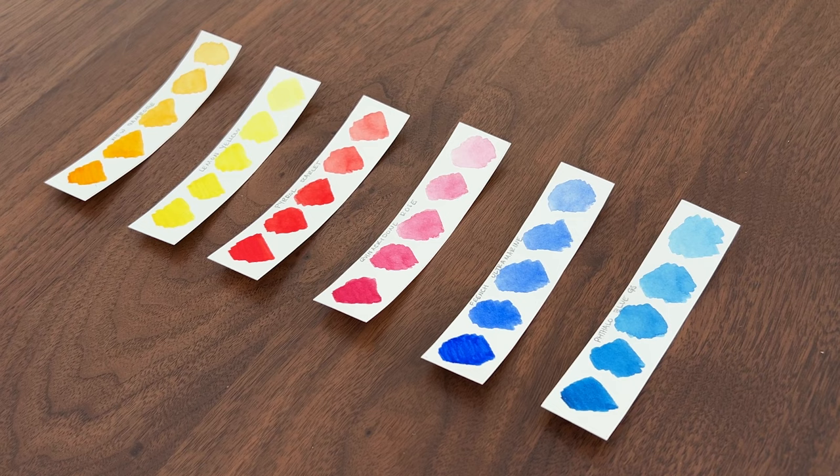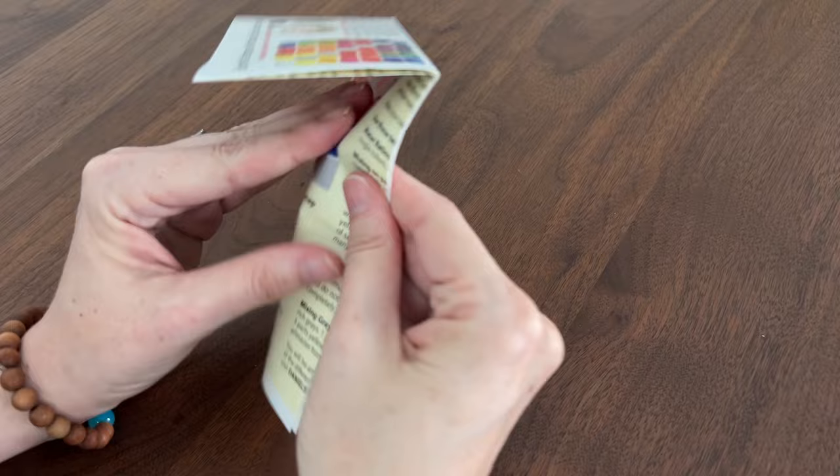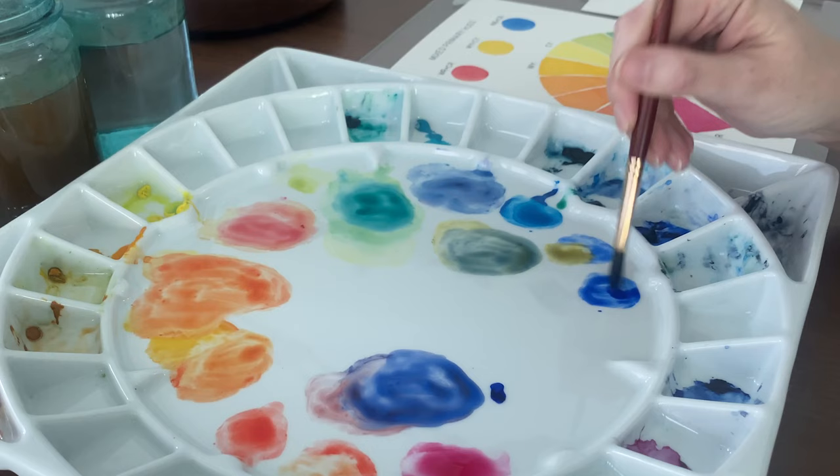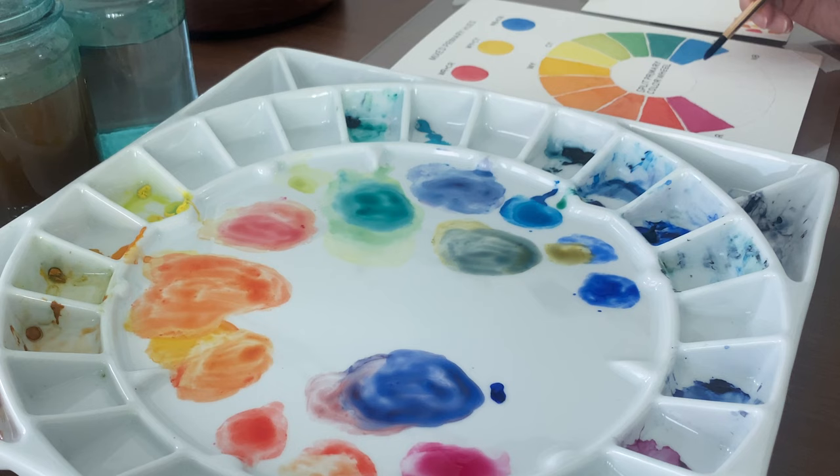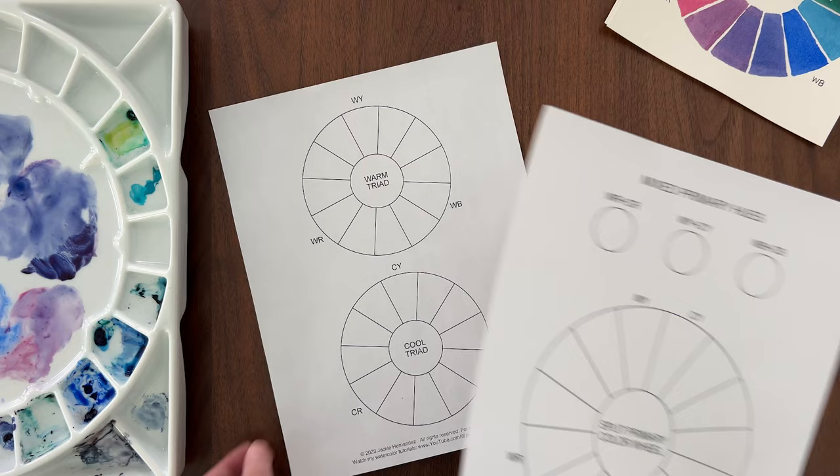The Daniel Smith set includes a color chart and some color mixing tips. These are helpful but you'll learn so much more by making your own color mixing charts. You can download a template for the color charts in the video description. I made them easy to trace so you can transfer them to your watercolor paper.